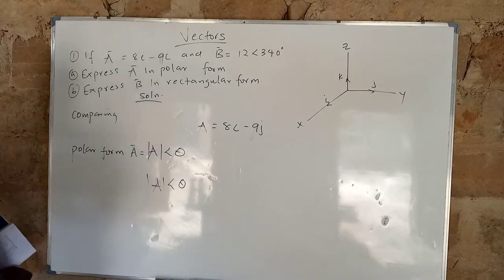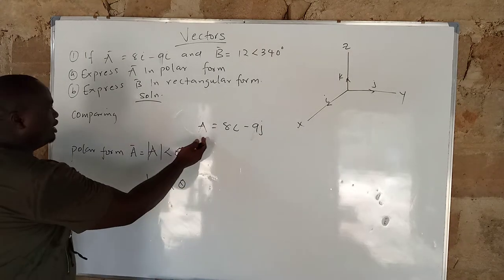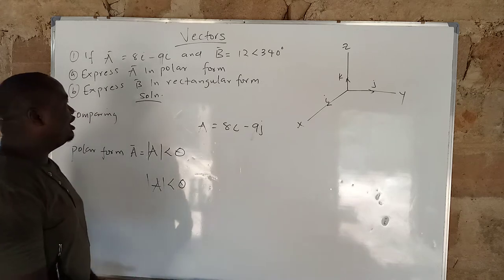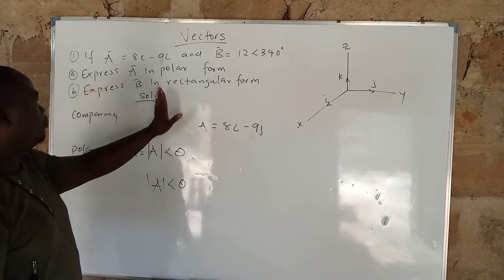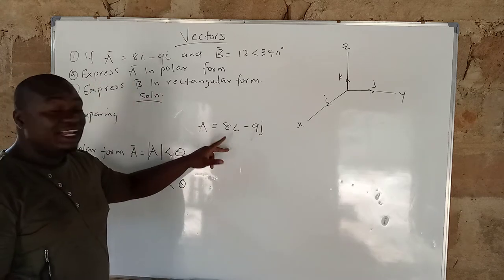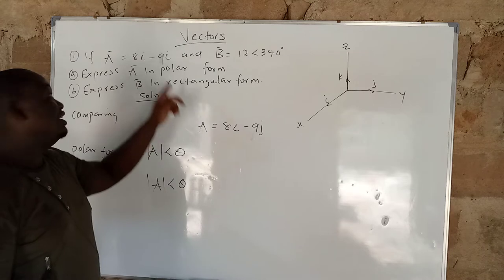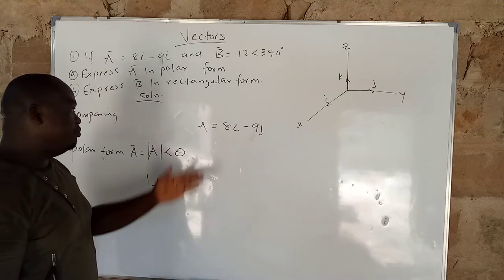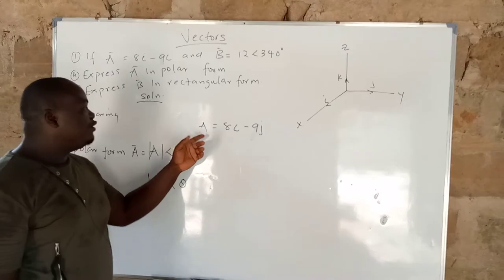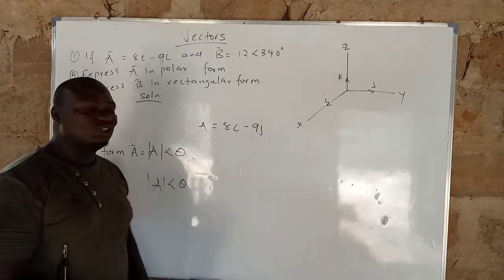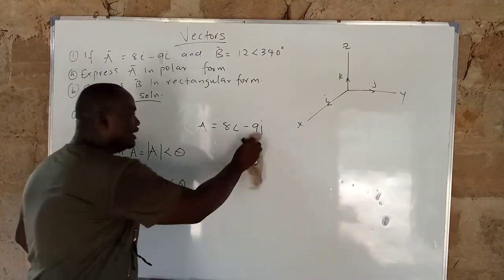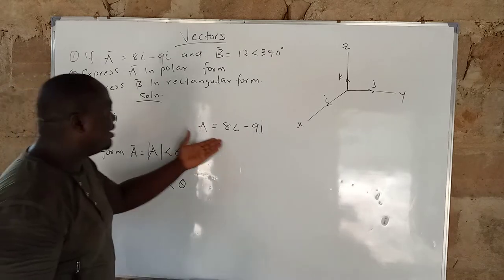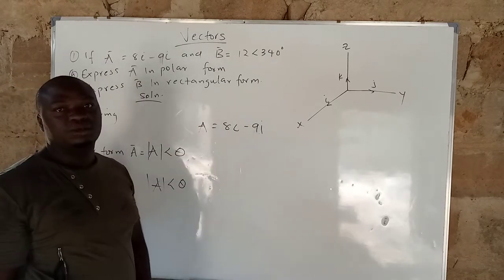Looking at the equation, A is 8i minus 9j. It means that if we are trying to convert this to polar form, A is already in rectangular form. If you see a vector in this form and they ask you which form it is, that means it is in rectangular form.